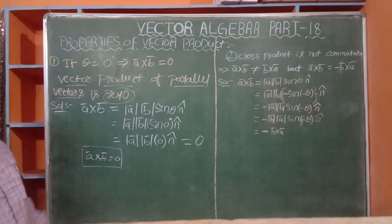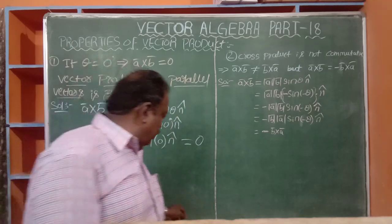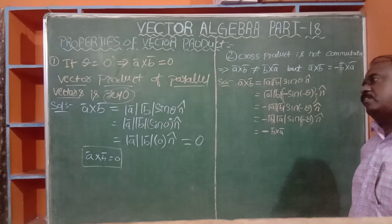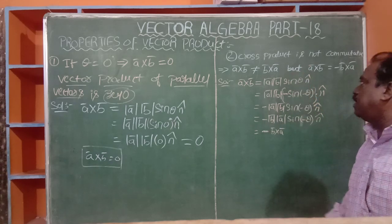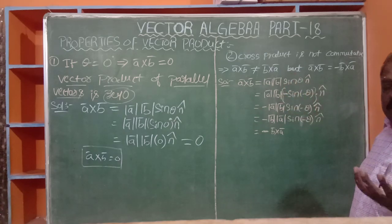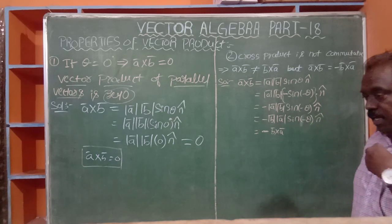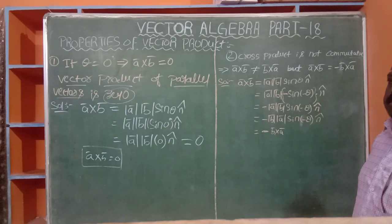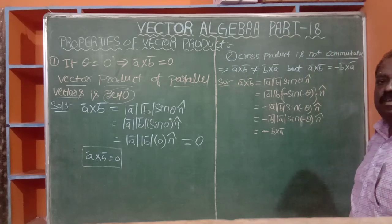Next, the cross product is not commutative. Commutative means, like 5 × 6 = 6 × 5 = 30. The cross product is not like that. A-bar cross B-bar is not equal to B-bar cross A-bar. In the case of the dot product, A-bar · B-bar = B-bar · A-bar — it is commutative. But here in cross product, it is not commutative. This is very important.